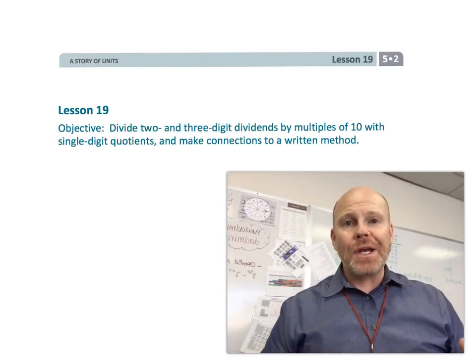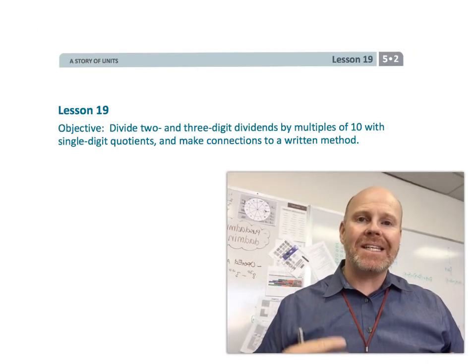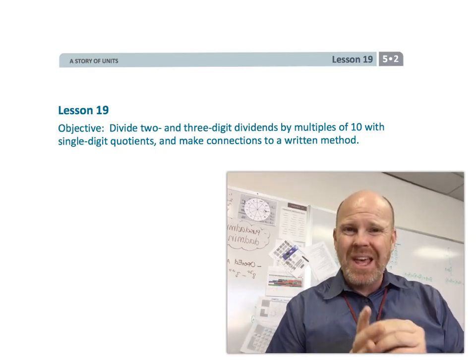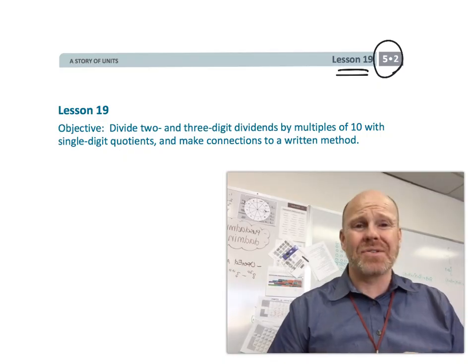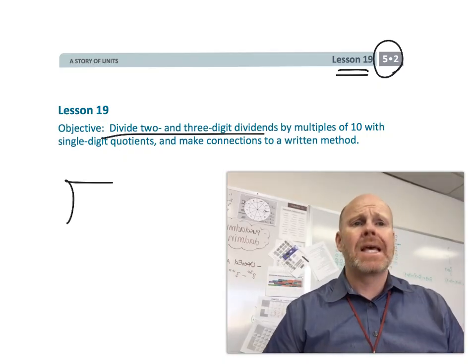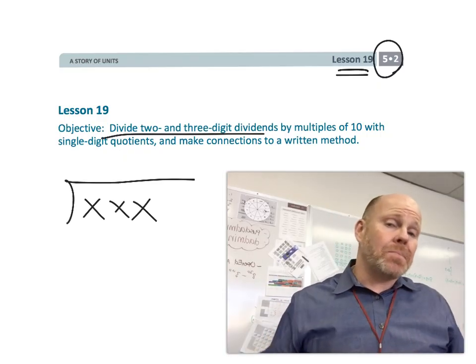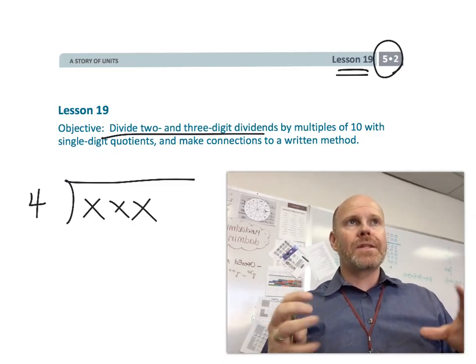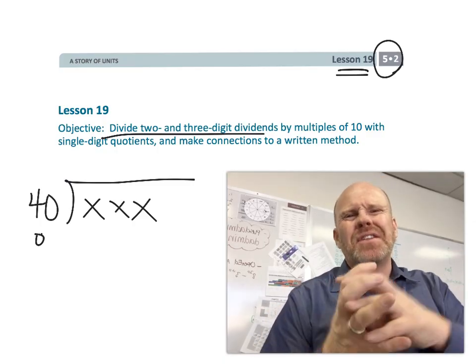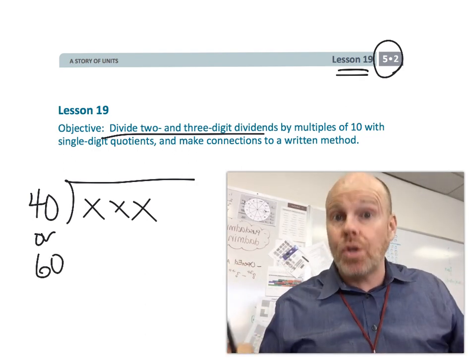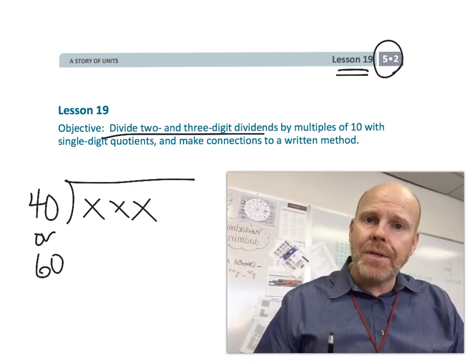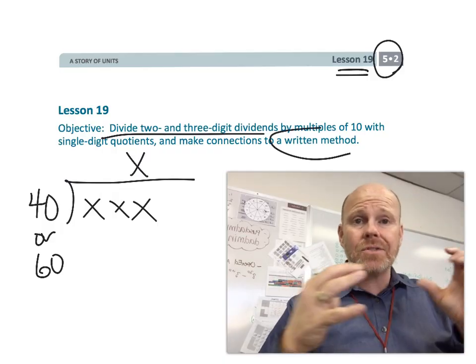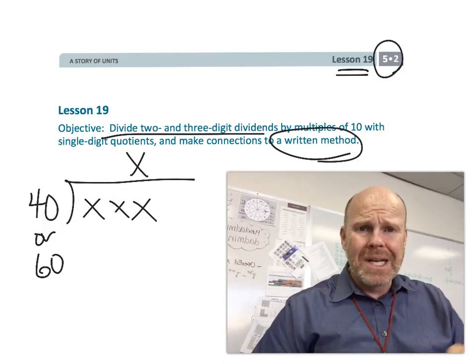All right, this is fifth grade, module two, lesson 19. In this lesson, we're going to be dividing two and three-digit dividends by multiples of 10 with single-digit quotients. The big thing about this lesson is we are going to be going straight to that written method, that standard algorithm. So let's get started.